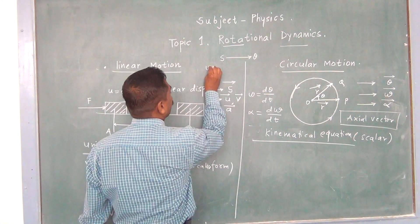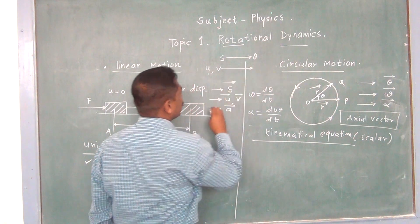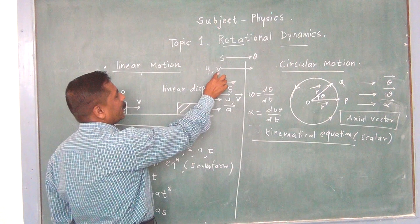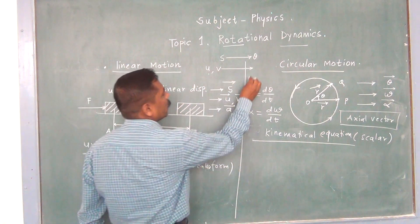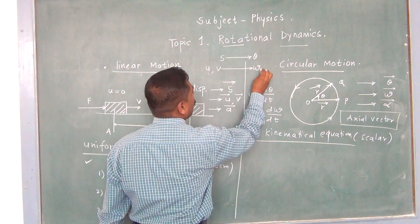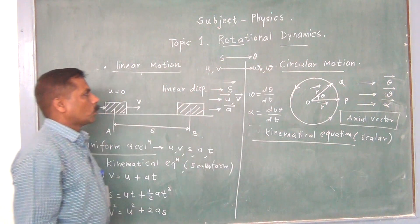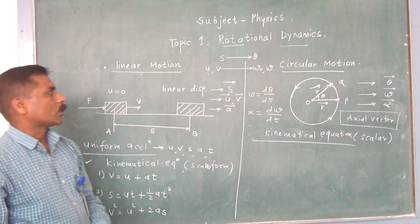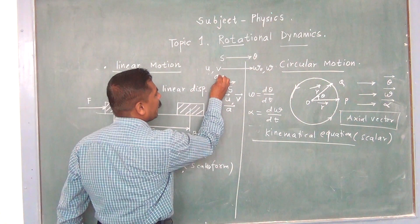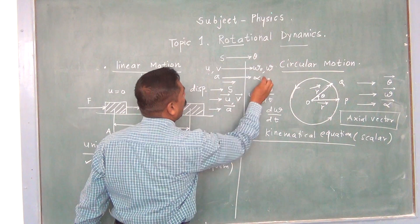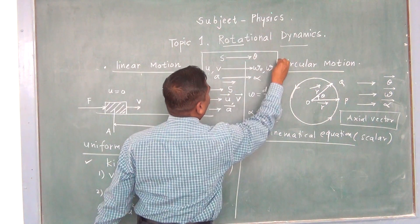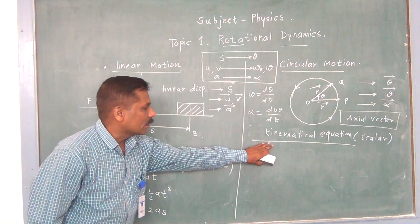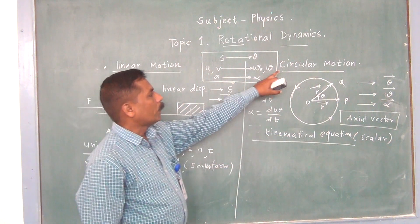U and V are called as the linear initial velocity and linear final velocity. We can use the notation omega 0 and omega instead of these two notations in the case of circular motion. And finally, A is analogous to alpha. If we know these analogous terms, then easily we can write the kinematical equations in the scalar form for circular motion.